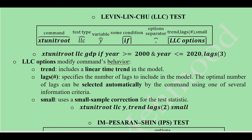An example command would be: xtunitroot LLC GDP with a condition such as year >= 2000 and year <= 2020, so the test is calculated for those selected years. After the comma, we specify lags — for example, three lags. We can use any information criterion to determine the optimal number of lags, or allow Stata to select them automatically.